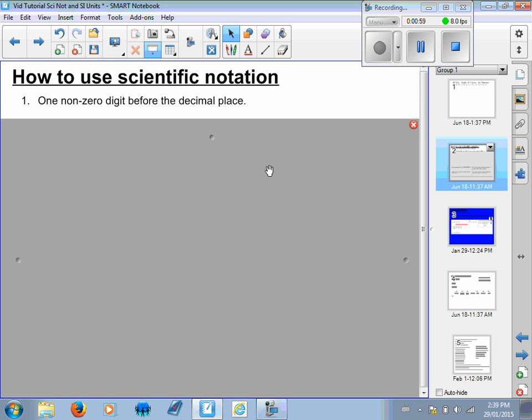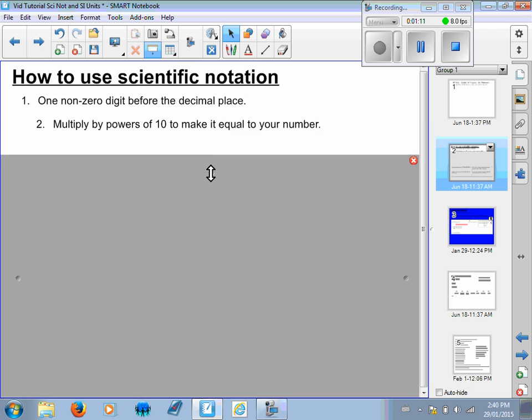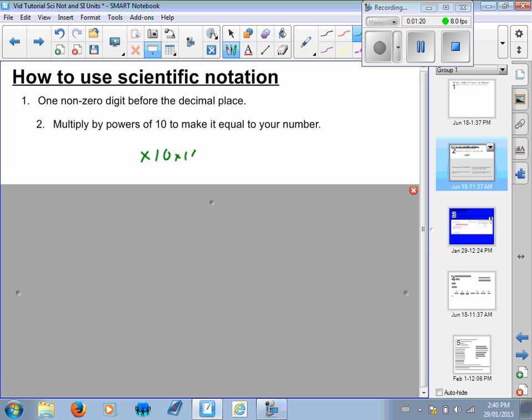The first rule is scientific notation has one non-zero digit before the decimal place. All the other digits go after the decimal place. That's obviously going to be a different number from what you had originally, so what you have to do is find out how many times you have to multiply by 10 to make it equal to your number. If it's a decimal, less than one, you're going to write 10 to the negative something. I'll give you some examples of that.